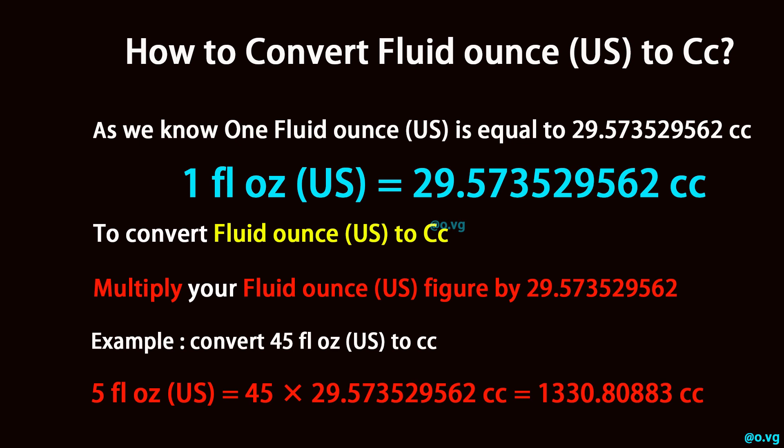Example: Convert 45 Fluid Ounce U.S. to CC. 45 Fluid Ounce U.S. is equal to 45 multiplied by 29.573529562 cubic centimeters, which equals 1,330.80883 cubic centimeters.